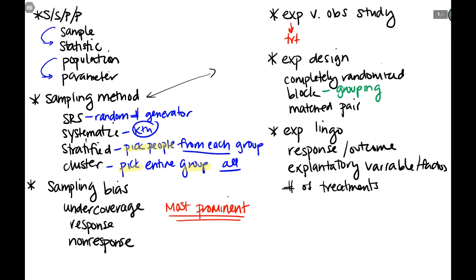The very last topic in part one was lurking versus confounding variables. If I ask about this, it would likely be a free response type question — mostly a common sense thing. You actually saw one in homework three: 'what's another possible explanation for this relationship or correlation?' You're essentially coming up with a confounding or lurking variable. That's part one — everything you need to know and how I might test it.